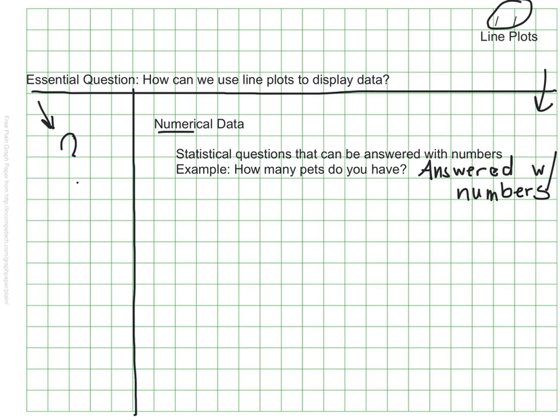The opposite of numerical data would be categorical data. Categorical data is collected when you ask questions that aren't answered with numbers but rather with a category. Makes sense? Categorical data. You might be able to think of an example right off the top of your head already. But if I ask you what your favorite color is, you probably wouldn't say 4 or 10. Instead you would pick a category. You would say blue or green. So that would be an example of a categorical question that would have categorical data. Now if we have numerical data we can use that to create a line plot which is what we're focusing on today.